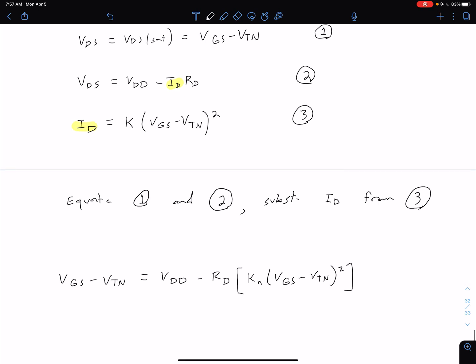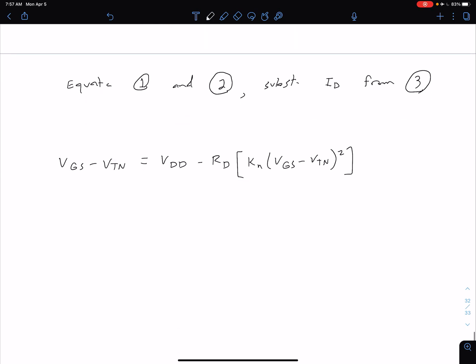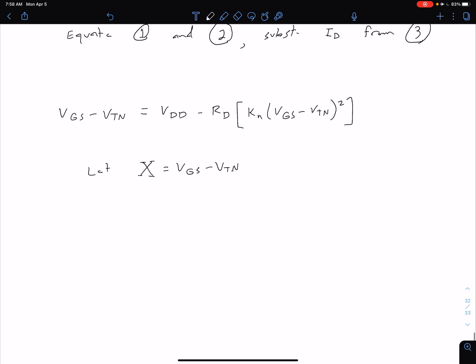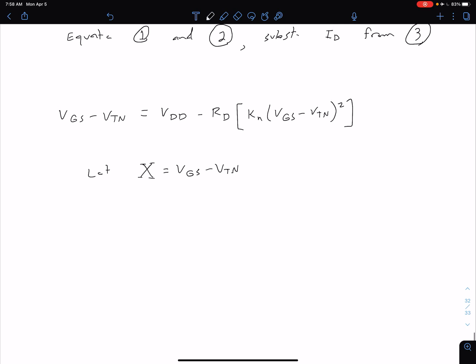To make things a little bit easier, I'm going to treat this VGS minus VTN as a single parameter. So I'm going to say, let capital X be equal to VGS minus VTN. So we have an X squared over here and an X over here. Before we plug in our values, let's just go ahead and rearrange this for clarity.